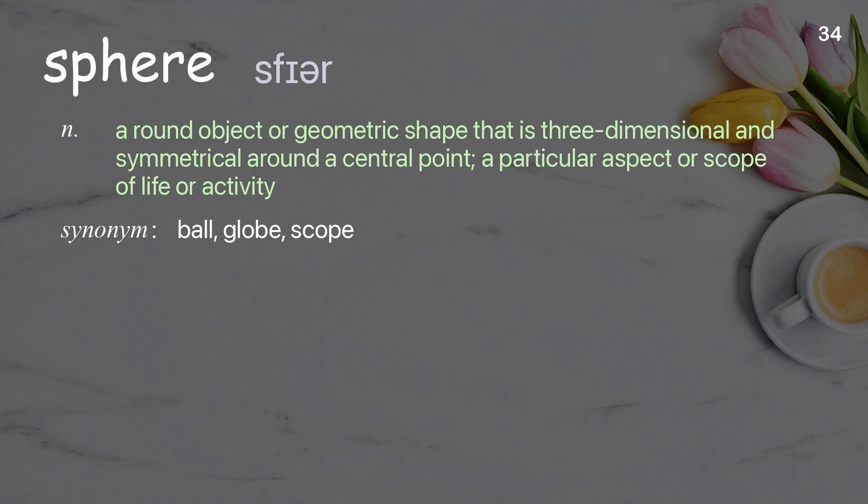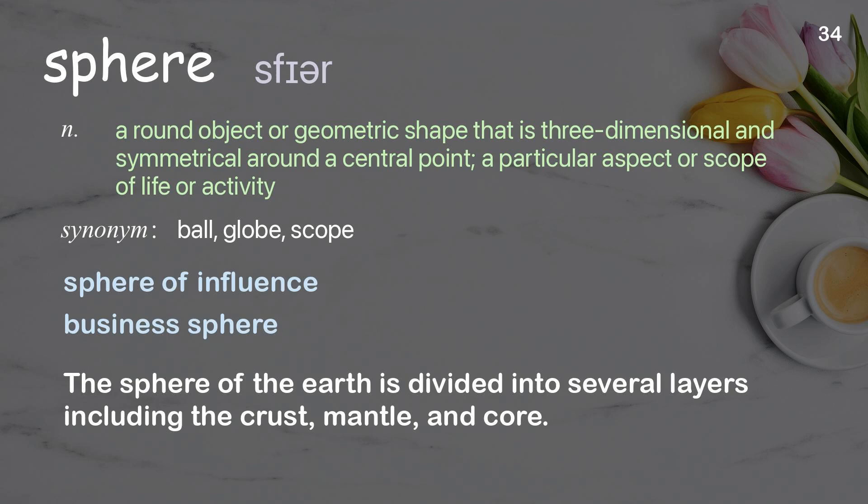Sphere: A round object or geometric shape that is three-dimensional and symmetrical around a central point; a particular aspect or scope of life or activity. Examples: Sphere of influence. Business sphere. The sphere of the earth is divided into several layers, including the crust, mantle, and core.